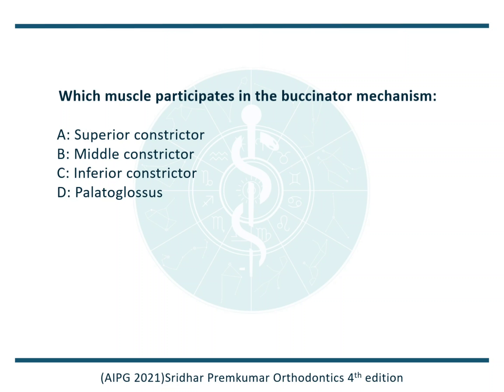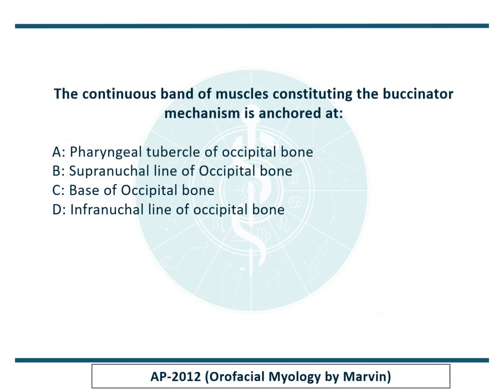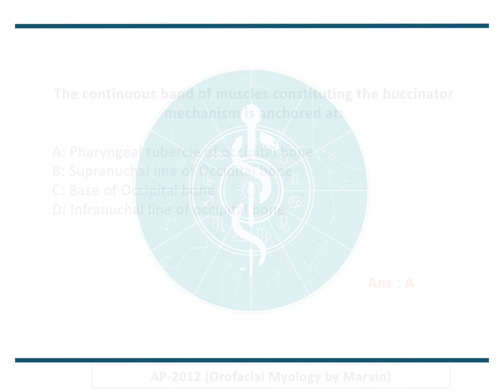This was asked in AP 2012: The continuous band of muscle constituting the buccinator mechanism is anchored at — and the answer is again A, the pharyngeal tubercle of the occipital bone. This buccinator mechanism will also be covered in orthodontics.